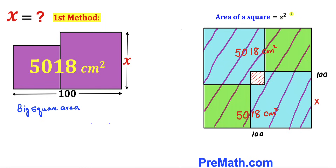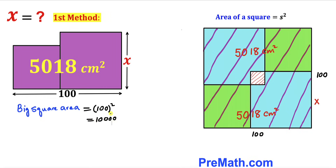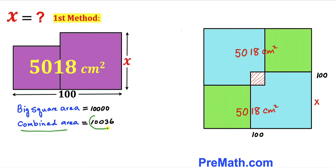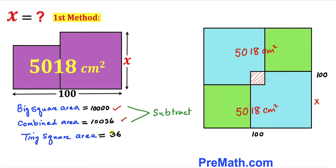Now let's calculate the area of the big square. Using the area formula, area equals s squared, where s is the side length. Our side length is 100 centimeters, so the area of the bigger square is 100 squared, which equals 10,000 centimeters squared. The combined area for all squares is 5018 plus 5018, giving us 10,036 centimeters squared. Subtracting, the tiny square area turns out to be 36 centimeters squared.